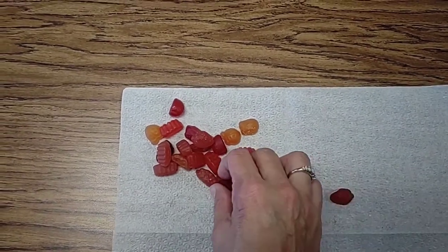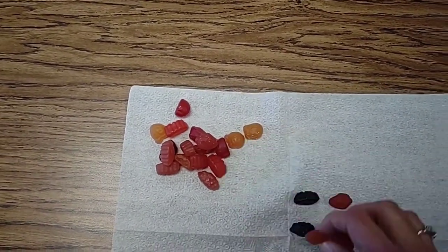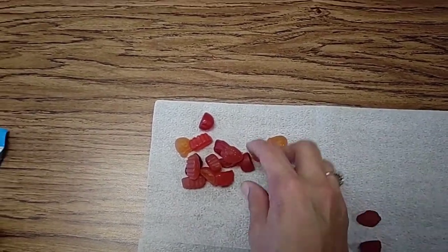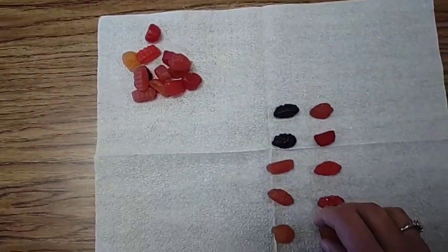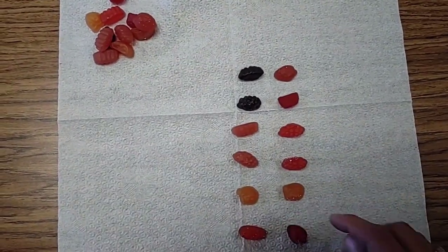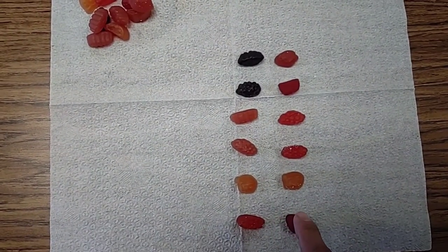That's one row, two rows, three rows, four rows, five rows, and six rows.